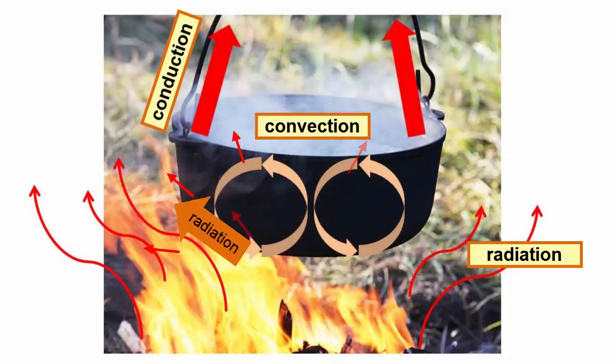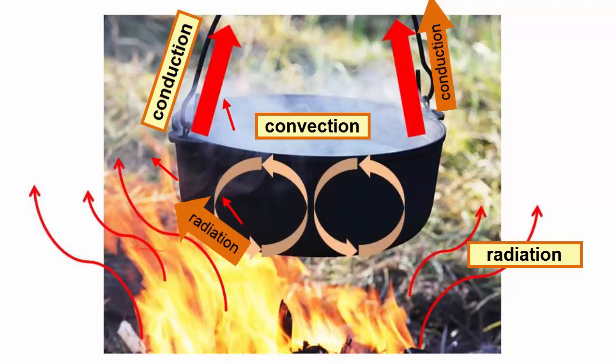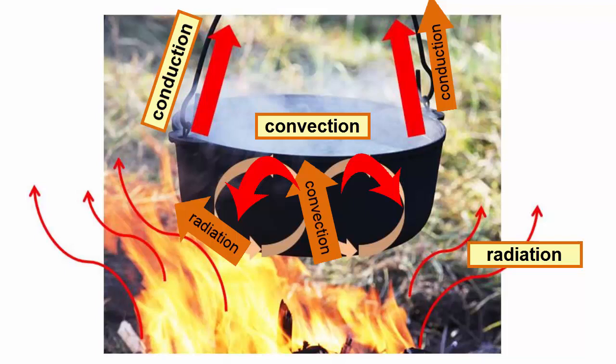In this image, we see the hot fire radiating heat outwards. The bottom metal of the pot picks up some of that radiation and heats up. That heat is then conducted through the pot to the water in contact with it. The water molecules within the pot mix with each other and transfer heat evenly by convection.